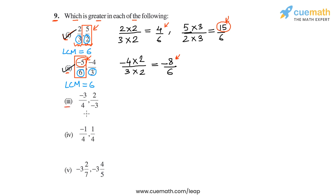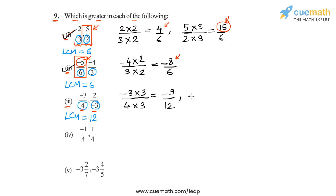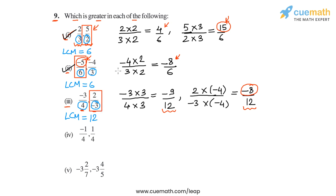Now let's come to part 3, in which we have to compare -3/4 and 2/(-3). Both of them are negative. The denominators are 4 and -3, and the LCM of 4 and 3 is 12. So let's write both as equivalent rational numbers with denominator 12. So -3/4 can be written as (-3×3)/(4×3), that's -9/12. And 2/(-3), since we want denominator 12, we multiply by -4 above and below, giving -8/12. Now comparing the numerators, -8 is greater than -9, so -8/12 is greater than -9/12. In other words, 2/(-3) is greater than -3/4. So 2/(-3) is the answer for part 3.